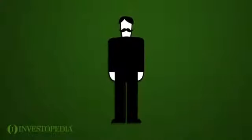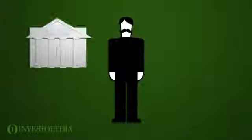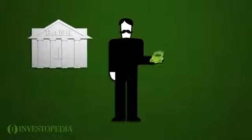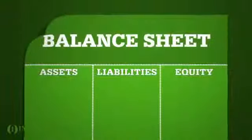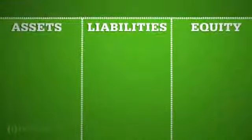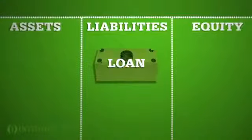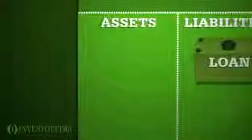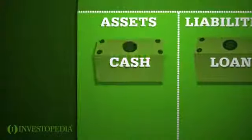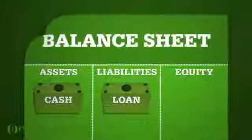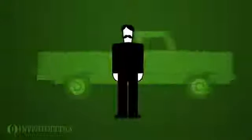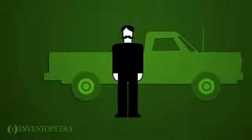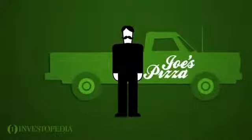Meet Joe. Joe goes to the bank and gets a small business loan. The bank gives him cash. On the balance sheet, his liabilities increase by the size of the loan and his assets increase by the same amount. The balance sheet remains in balance. Joe uses the cash to buy a truck and start his own pizza delivery service.